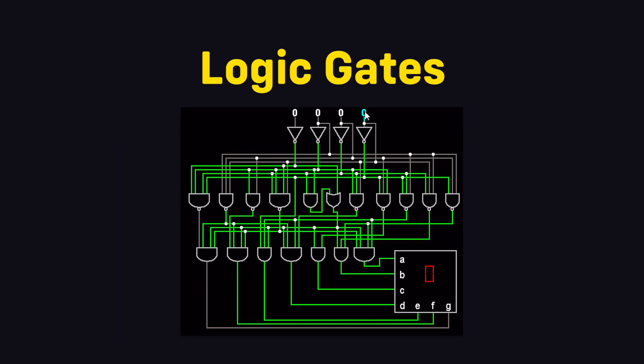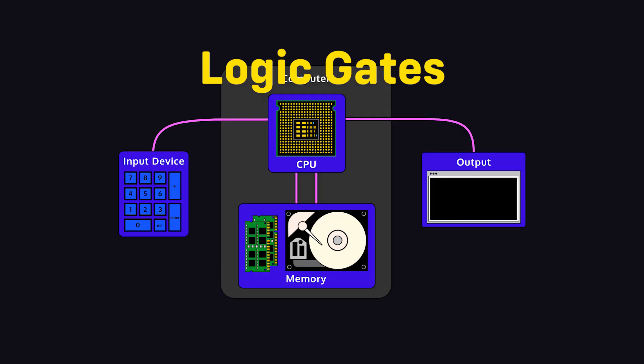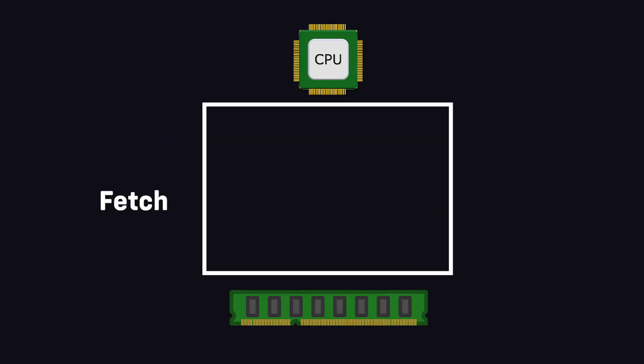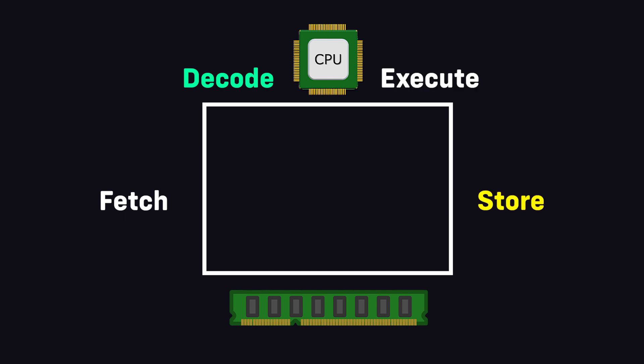The basic work of a CPU involves memory. You can fetch data from memory, decode it, execute it, and store it. This is the fetch-decode-execute cycle.